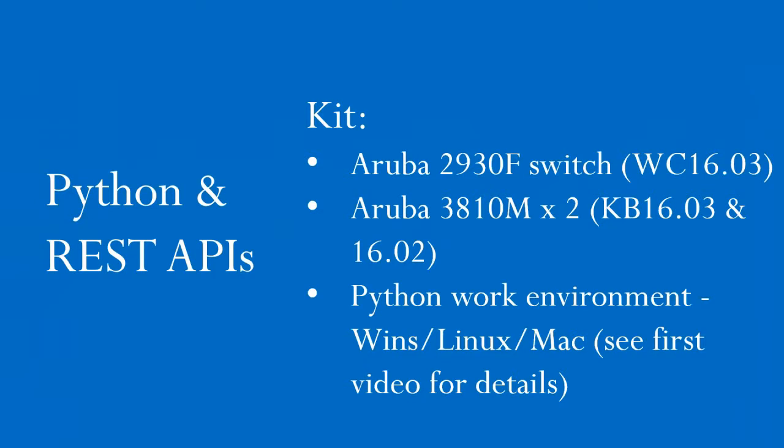Here's the kit. I've got my trusty 2930F switch, which I used in the other videos, running code 1603. Then I've got a couple of 3810Ms running different versions of code — 1603 and 1602. The reason being will become apparent shortly. We also have the Python work environment, which should be running on Windows, Linux, or Mac. Details in the first video of this series about how to set that up.